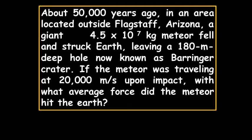The next problem is both scientific and historic. It is actually a true story. About 50,000 years ago, in an area located outside Flagstaff, Arizona, a giant 4.5 times 10 to the 7th kilogram meteor fell and struck Earth, leaving a 180 meter deep hole known as Barringer Crater. If the meteor was traveling at 20,000 meters per second upon impact, with what average force did the meteor hit the Earth?